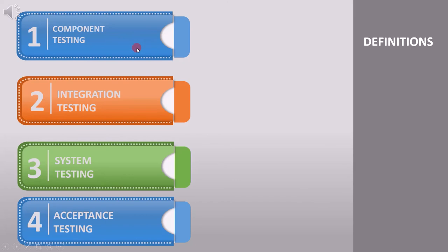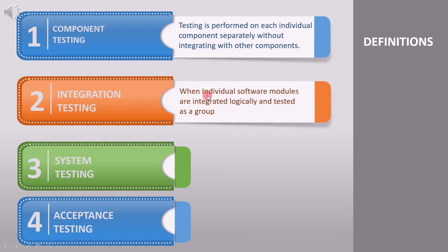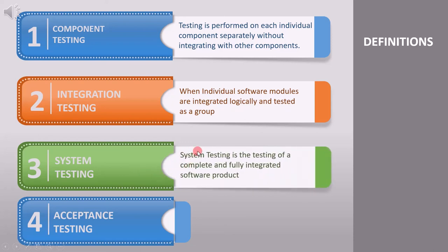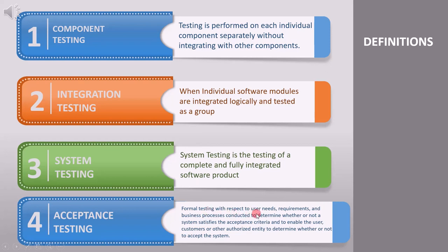Let's quickly review the definitions. First, component testing: testing is performed on each individual component separately, without integrating with other components. Second, integration testing: individual software modules are integrated logically and tested as a group. Third, system testing: the testing of a complete and fully integrated software product. Fourth, acceptance testing: formal testing with respect to user needs, requirements, and business processes, conducted to determine whether or not a system satisfies the acceptance criteria and to enable the user, customers, or other authorized entity to determine whether or not to accept the system. That's it from this lecture.